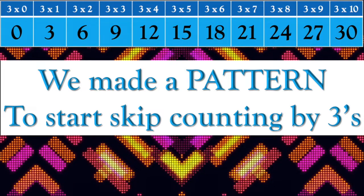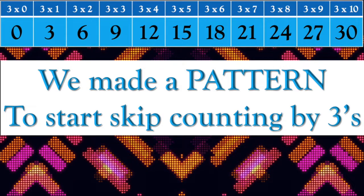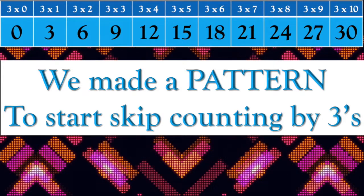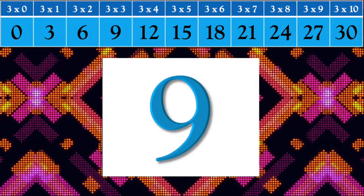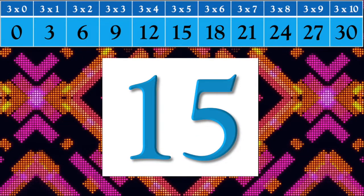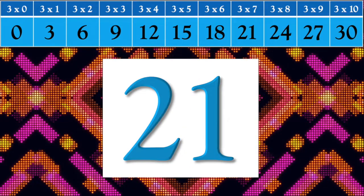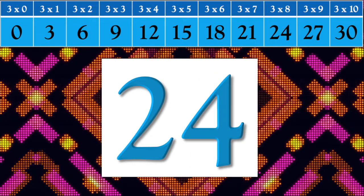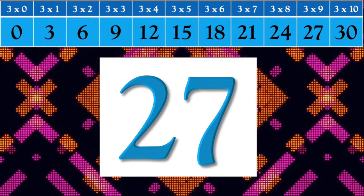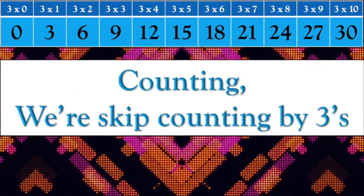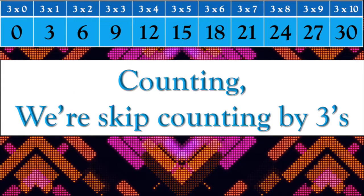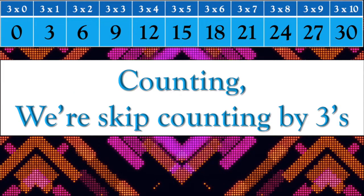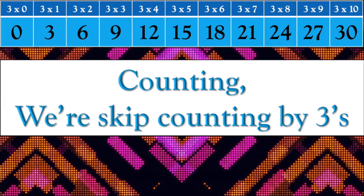We made a pattern to start skip counting by threes: 3, 6, 9, 12, 15, 18, 21, 24, 27, 30. Counting, we're skip counting by threes.